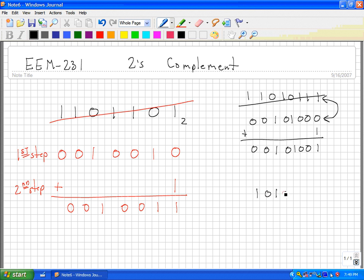1, 0, 1, 0, 1, 0. We go to one's complement form, which would be 0, 1, 0, 1, 0, 1, then we add a 1.